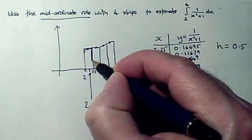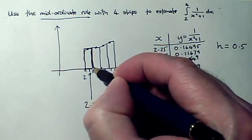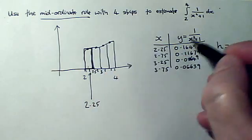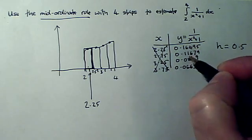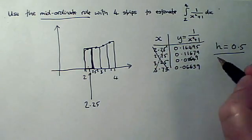So for each strip, we're estimating its area as a rectangle, using the y-coordinate as the height. But the x-coordinate isn't the width. In fact, we don't use these values again. We just use the y-coordinates and the width of the strip.